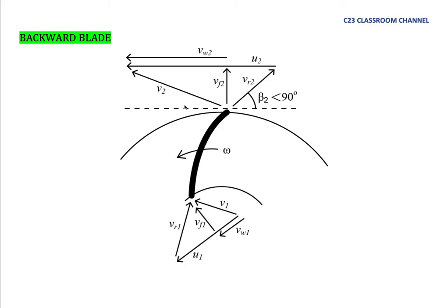And this is the backward blade like this, and the velocity triangle is like this. The blade angle is less than 90 degrees. You may refer to my previous video about how to draw a velocity triangle in blade.